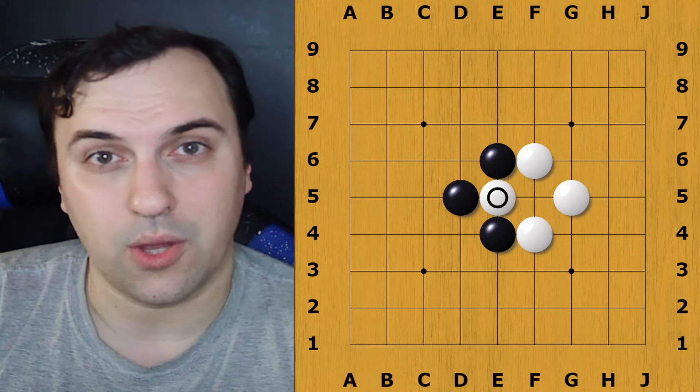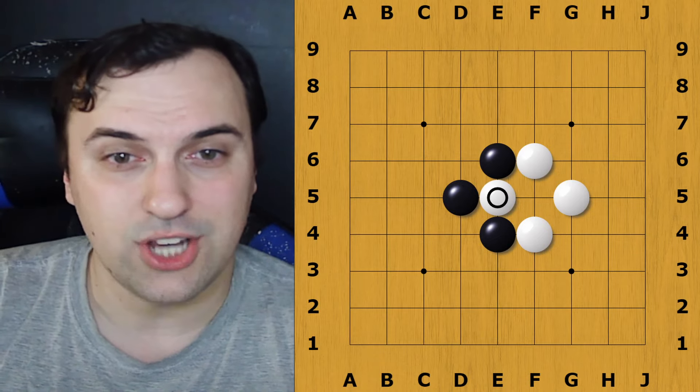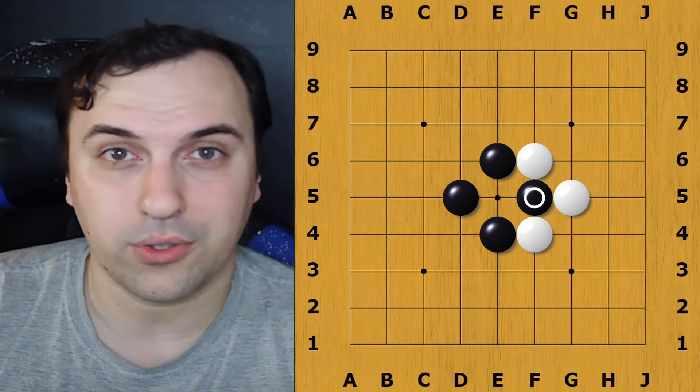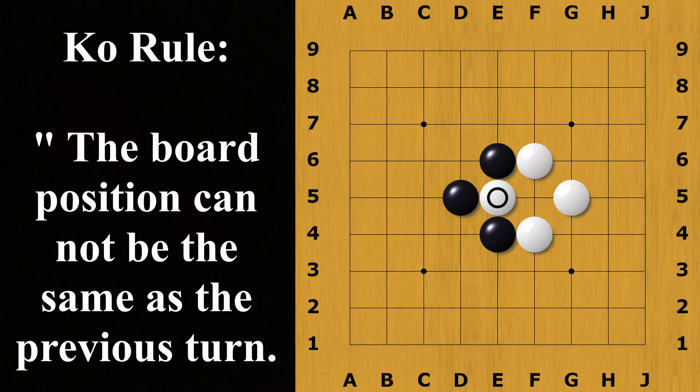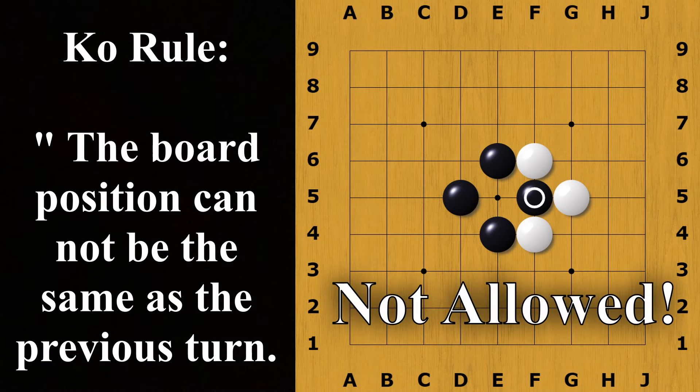This can lead to an interesting position where both players capture back and forth. This shape is called a Ko. Thus, the Ko rule exists. The Ko rule states that the board cannot look the same as it did on the previous turn.